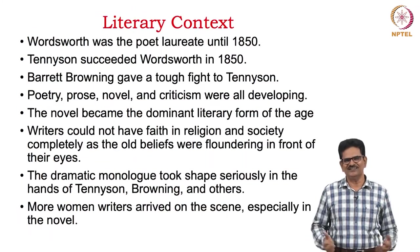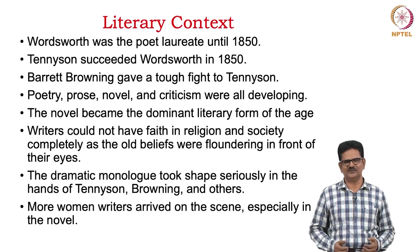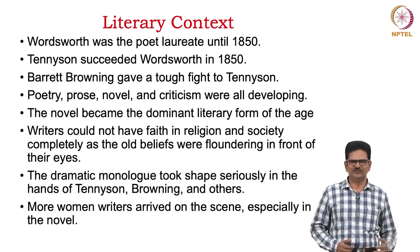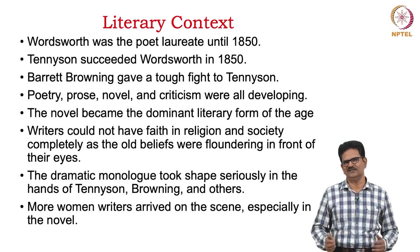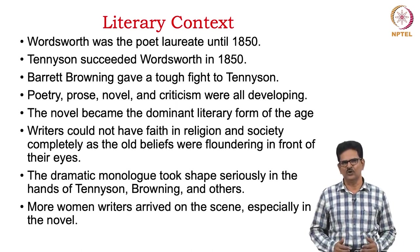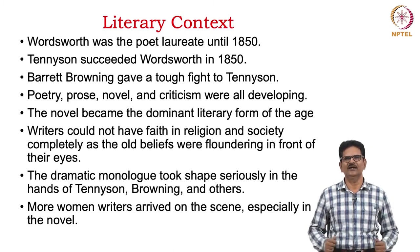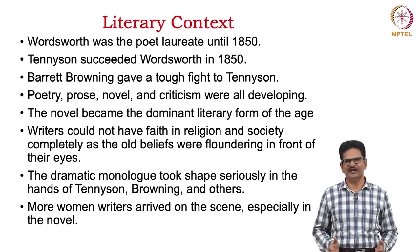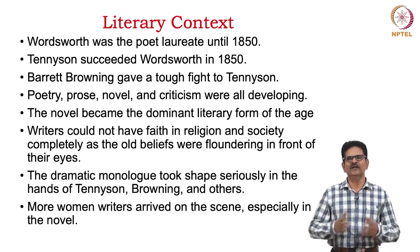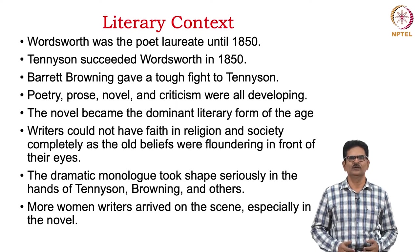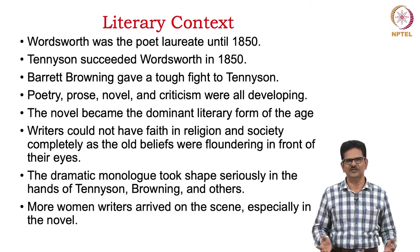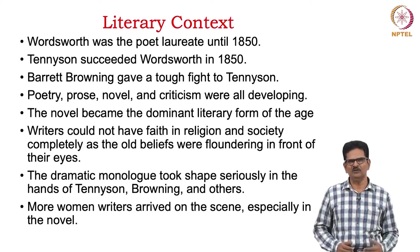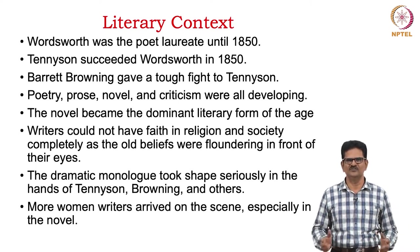The literary context is also equally very important for us to understand this period. Wordsworth was the poet laureate until 1850, that is, his death. Immediately after this, Tennyson followed Wordsworth as poet laureate in 1850. We have to understand that Elizabeth Barrett Browning, before her marriage, was a very popular poet, and she gave a tough fight to Tennyson when it came to the choice of poet laureateship. Poetry, prose, novel, and criticism were all developing during this period in different ways. However, the novel became the most dominant literary form of this age.